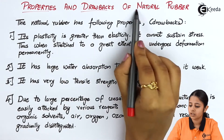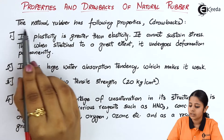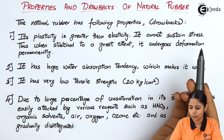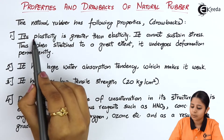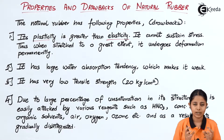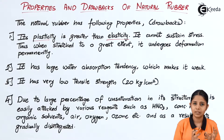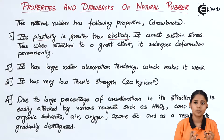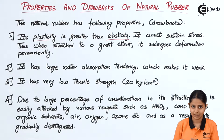Properties and drawbacks of natural rubber. The natural rubber has the following properties, which we can also call drawbacks. The first one is its plasticity is greater than its elasticity. Any substance has two properties: it can either possess plasticity or elasticity. Now what are the plastic properties?